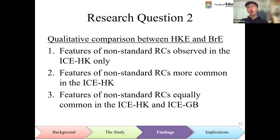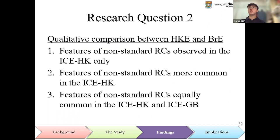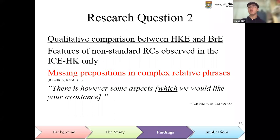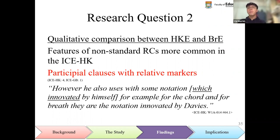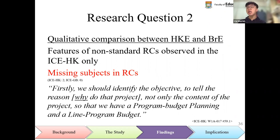Relative clauses in Hong Kong English and British English were also compared qualitatively by identifying relative clauses whose syntactic structures deviated from grammatical descriptions in descriptive grammar. The features of nonstandard relative clauses were put into three categories. The first category includes language features observed only in Hong Kong English, and it contains four features: missing prepositions in complex relative phrases, which could be related to learners' difficulty in mastering prepositions; missing main verbs in relative clauses, related to confusion between relative clauses and postpositive adjective phrases; participial clauses used as relative clauses, related to confusion between relative and participial clauses; and missing subjects in relative clauses, which could be related to Cantonese as a pro-drop language.